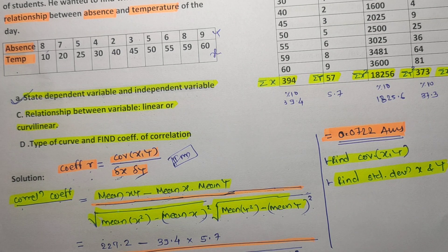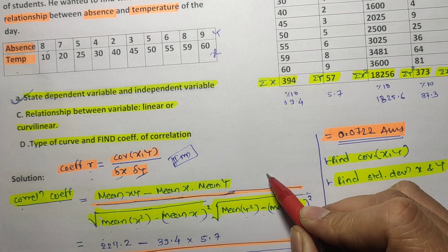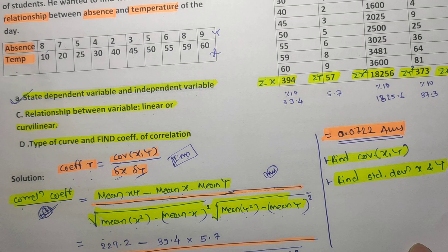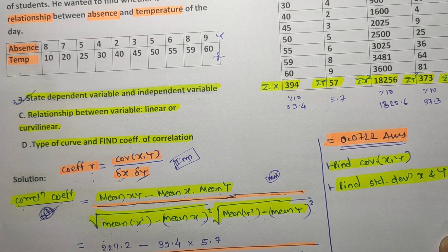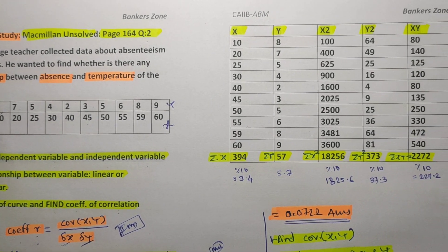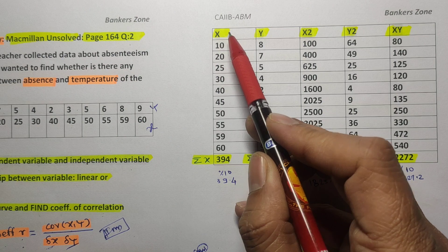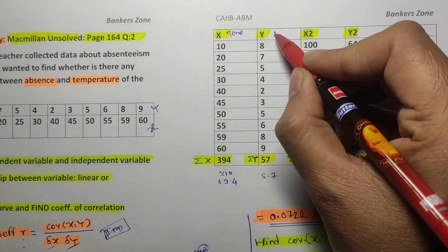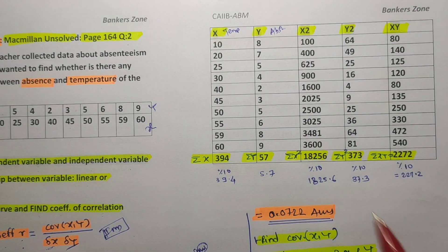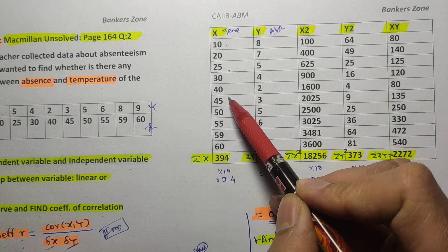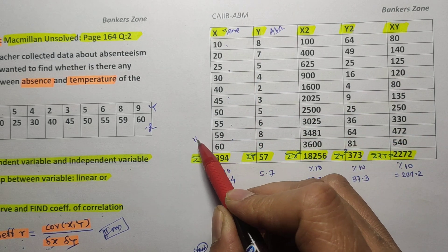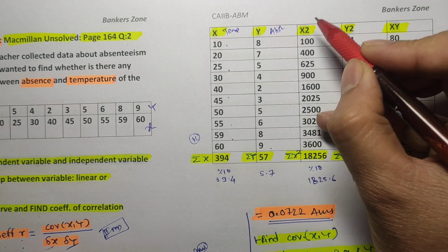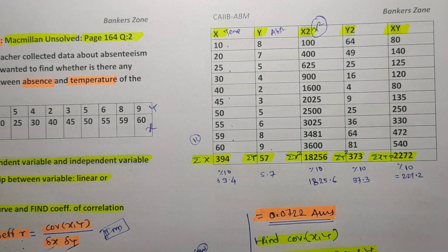You must memorize that formula — it is very important. Now to apply it, we take X as temperature and Y as absenteeism. There are 10 values in total (n = 10). The next step is to calculate X² by squaring each X value: for example, 10² = 100, 20² = 400, 25² = 625, and so on.